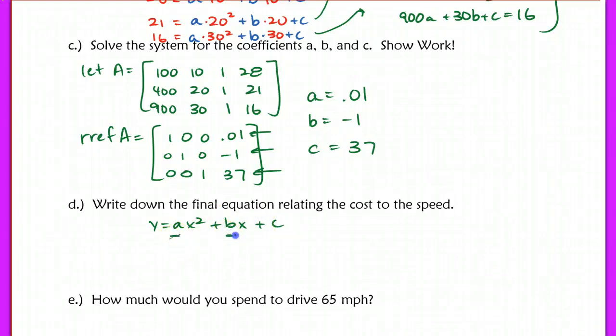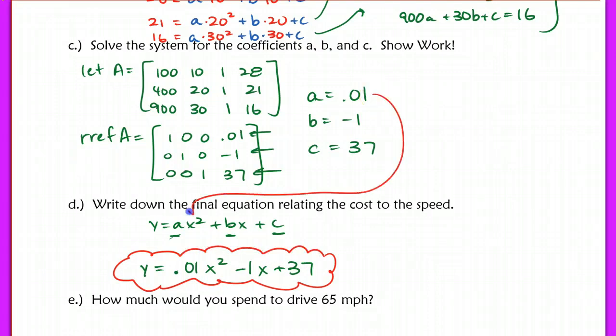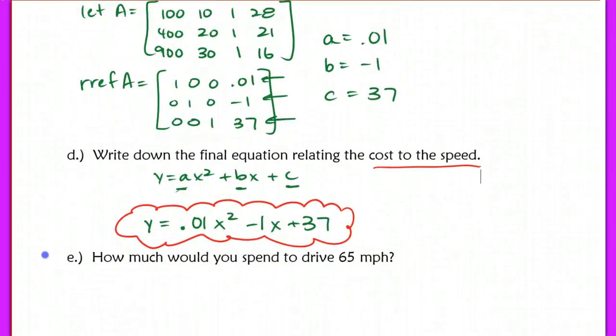Now our final equation, remember we have an equation that says y equals ax squared plus bx plus c. We just found a, b, and c, so all we need to do is substitute that in. So y is now equal to 0.01x squared minus 1x plus 37. This is really sometimes hard for students to interpret the answer. They want to, for some reason, plug 0.01 in for x, but you're not doing that. Make sure that you're looking at what your variables are defined as and what the original equation should look like so that you can plug it in correctly. So that's our equation that relates cost to the speed.